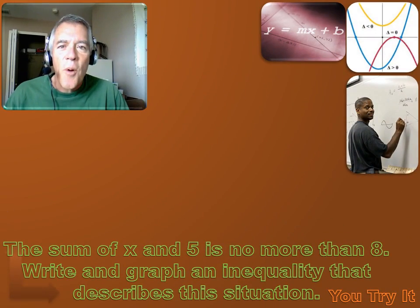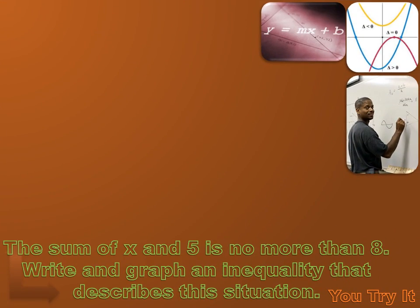Now you try this one. Hit the pause button, do the problem, and then hit the forward key to move on to the answer. The problem: the sum of x and 5 is no more than 8 — write and graph an inequality that describes the situation. I'm going to circle the numbers: x, 5, and 8. x is a variable number; 5 and 8 are constant numbers. I'll write them down: x, 5, and 8, and figure out how to combine them.